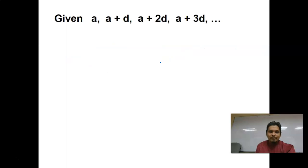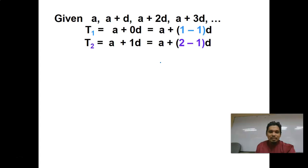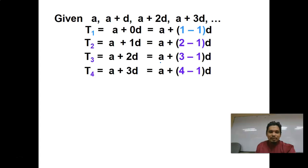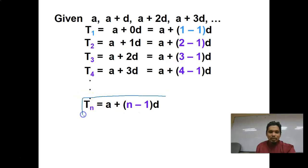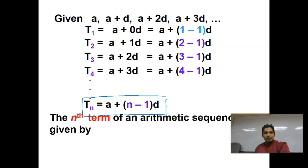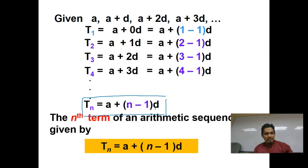With first term A plus 0D, second term, third term, fourth term, and so on — we generalize this as the nth term: Tn = A + (n−1)D. The nth term is given by that formula.